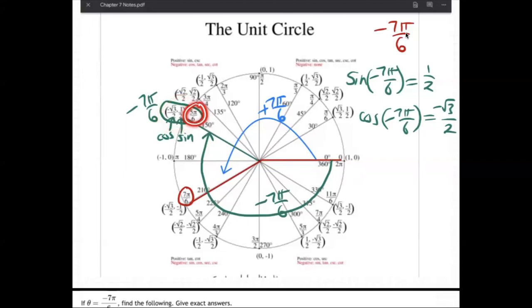And you might say, wait, that's 5π over 6. Well, yeah, that's the same as positive 5π over 6. It's also negative 7π over 6. See how I did that?